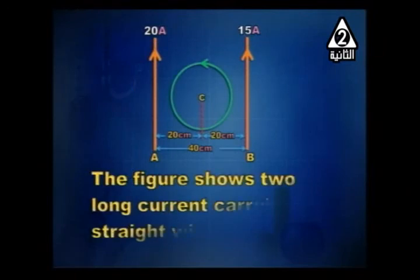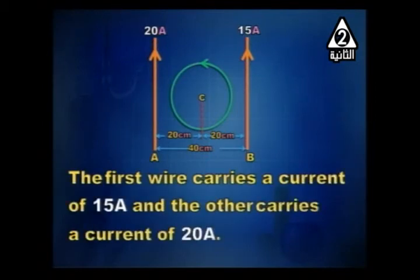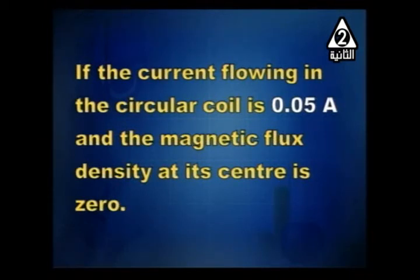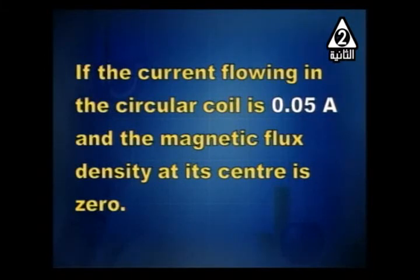The figure shows two long current-carrying straight wires, 40 cm apart. The first carries 15 A and the other carries 20 A. A circular coil of radius 2π cm is placed between the wires such that they all have the same plane. The current flowing in the circular coil is 0.05 A, and the total magnetic flux density at the center is zero. Calculate the number of turns on the coil.